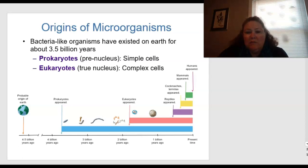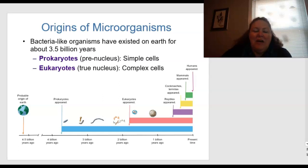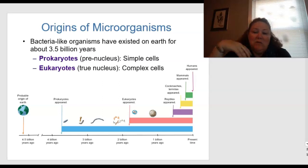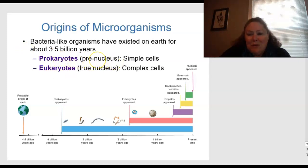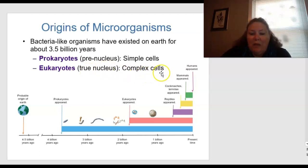Where did microorganisms come from? Bacteria-like organisms have existed on Earth for about 3.5 billion years. We can estimate through carbon dating. We have prokaryotes, which are pre-nucleus — the really simple organisms, not evolved or complicated at all. Eukaryotes have a true nucleus. We, as humans, are eukaryotic beings, and these are the more complex cells.